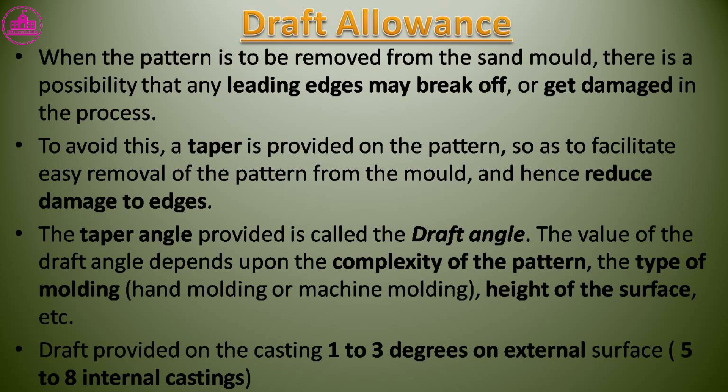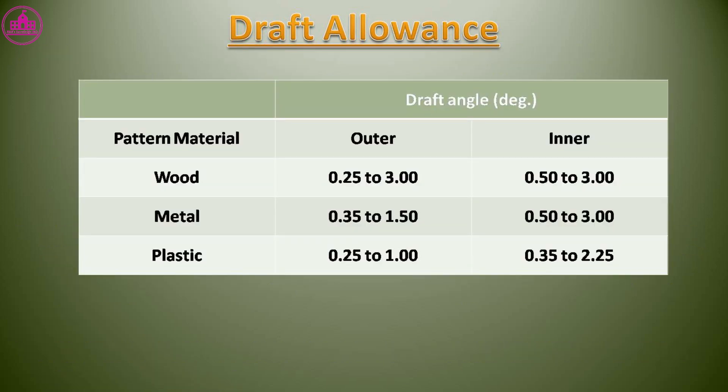Draft allowance: when the pattern is to be removed from the sand mold, there is a possibility that leading edges may break off or get damaged in the process. To avoid this, a taper is provided on the pattern to facilitate easy removal and reduce damage to edges. The taper angle provided is called the draft angle, and its value depends on the complexity of the pattern, the type of molding, and the height of the surface. Draft provided on the casting is typically 1 to 3 degrees on external surfaces.